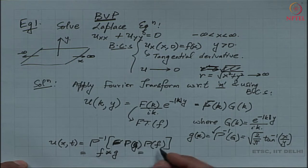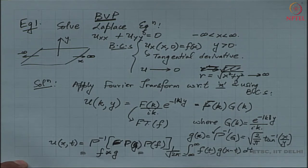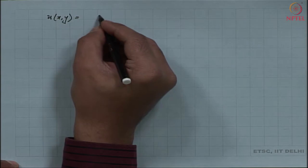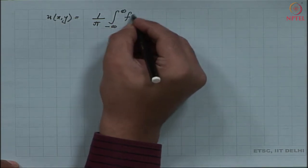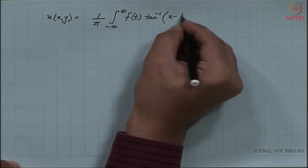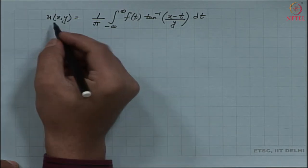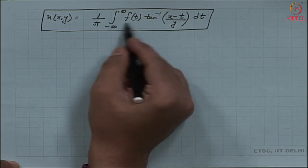The inverse Fourier transform of capital G is sqrt(2/π) · arctan(x/y), using the table of Fourier transforms from the course web page. Since the solution is the inverse transform of a product of two transforms, by the convolution theorem, u(x, y) equals the convolution of f with g: the integral from −∞ to ∞ of f(t) · arctan((x−t)/y) dt, multiplied by 1/π.